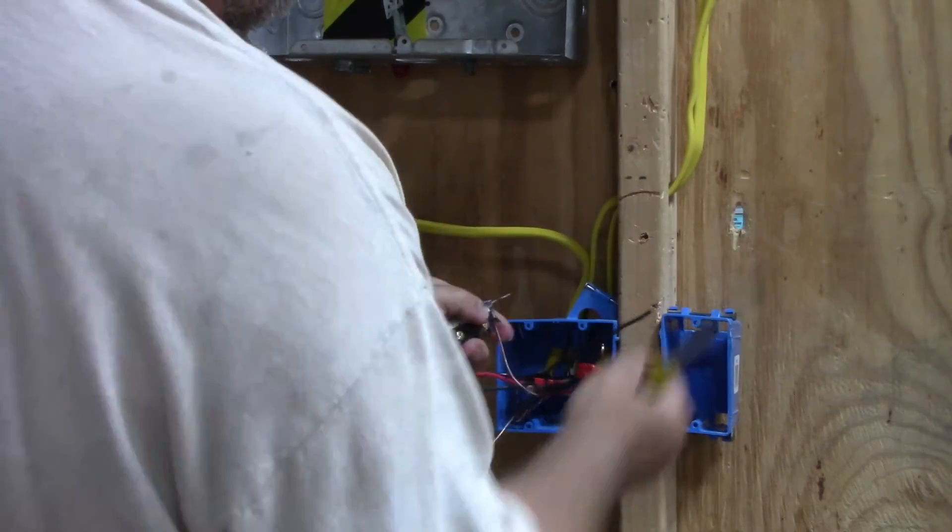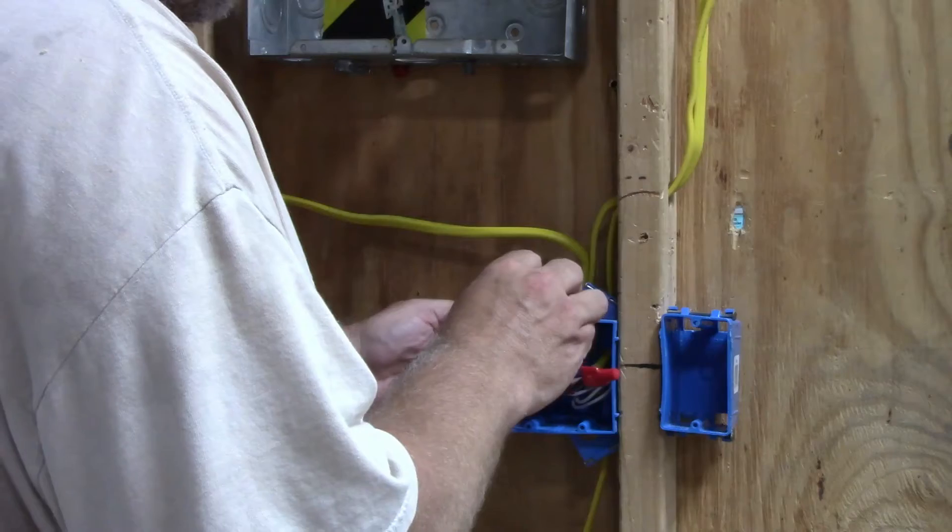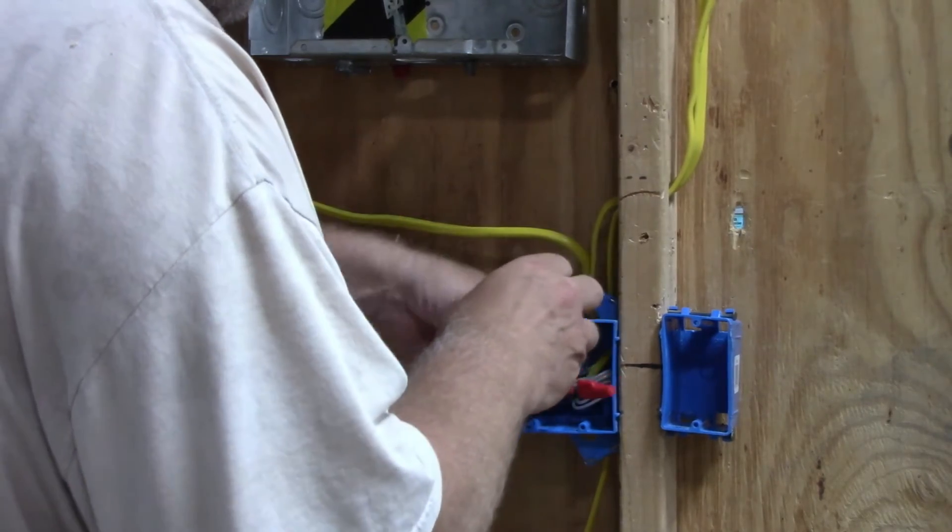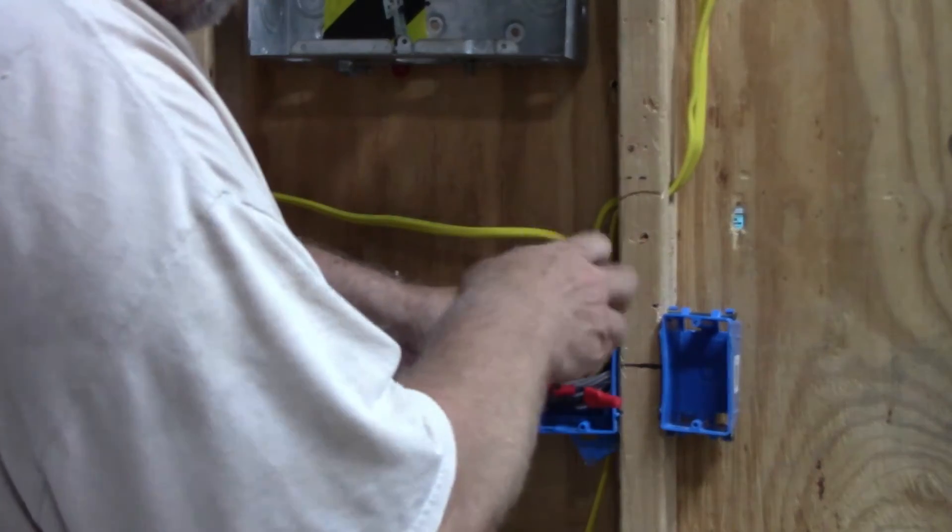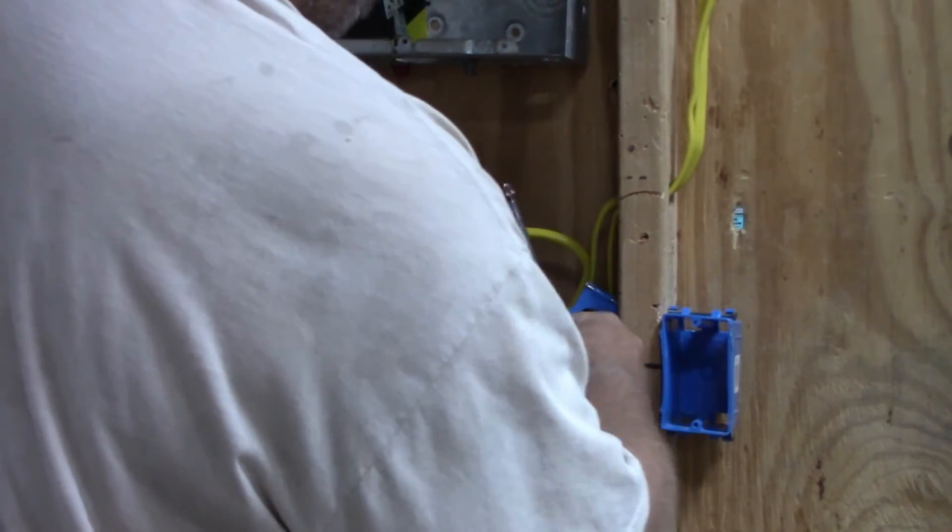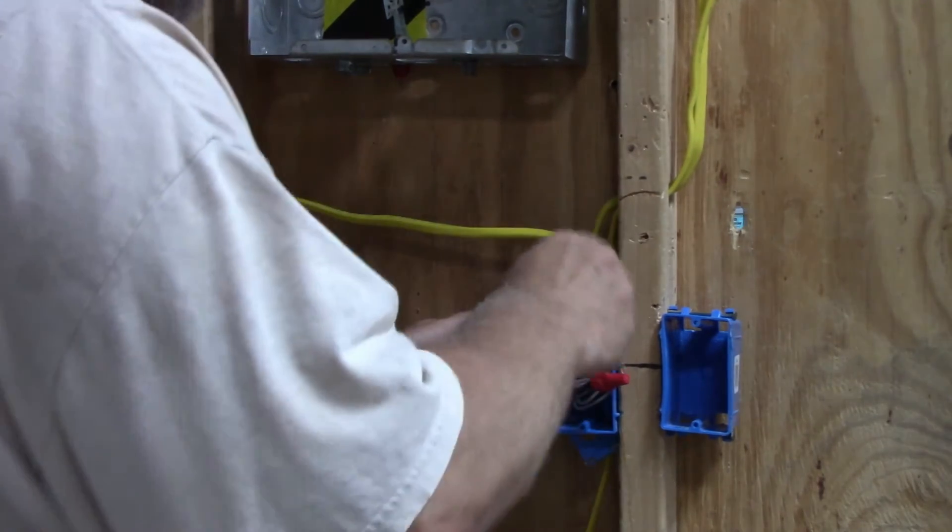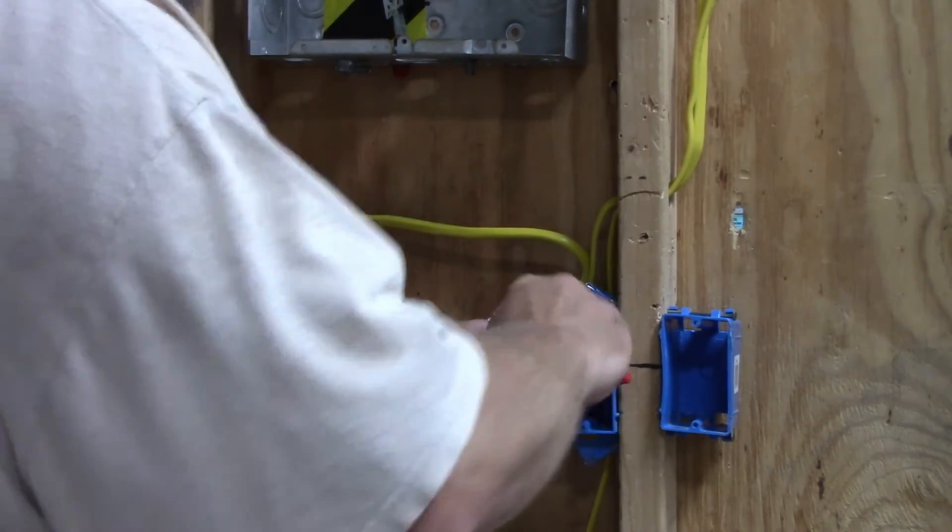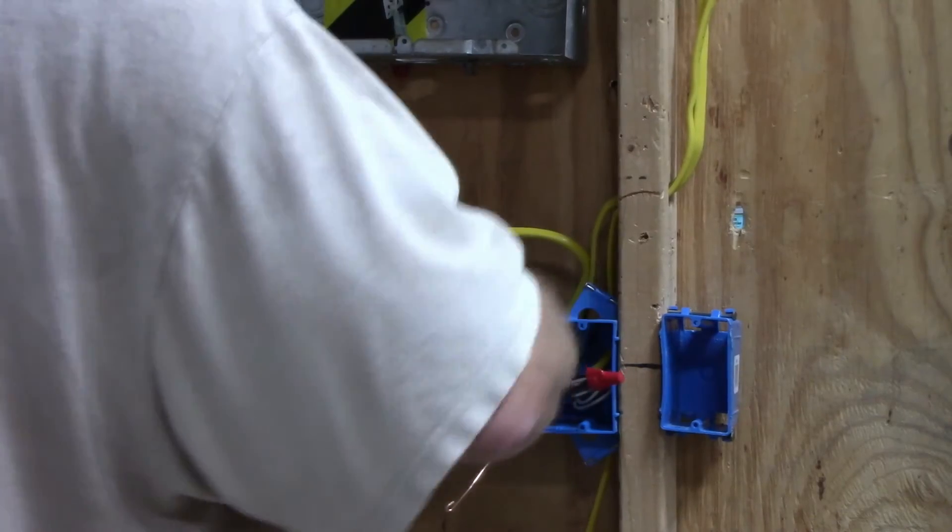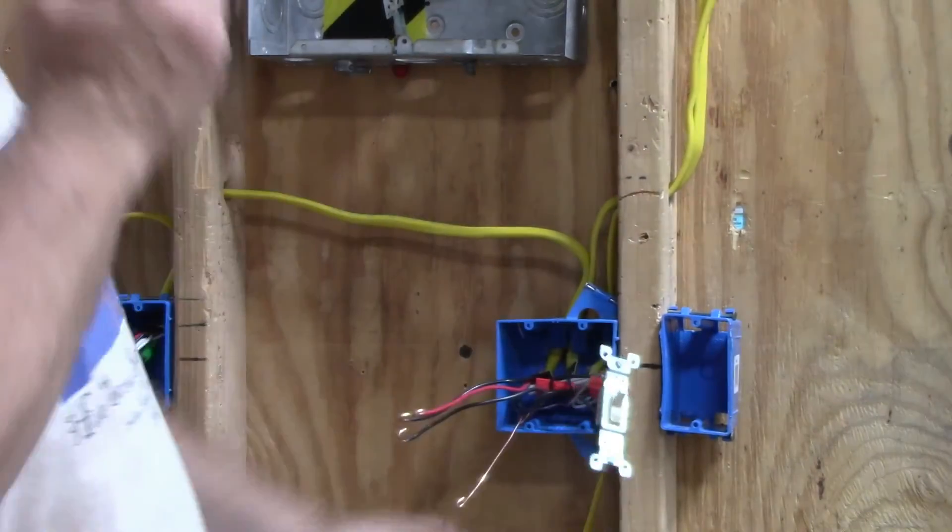Flip your switch over. Put your hot and switch leg on your other two screws. Make sure you get good connections. Always put your loop in the direction that your screw spins. I spin these clockwise, so this wire should go on in a clockwise direction. There's my single pole switch.